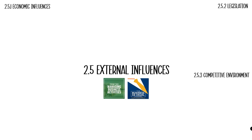2.5 is all about external influences that affect a business. By this point in the course, having covered Theme 1 and Theme 2, we've looked at all four main functional areas of a business — the marketing department, human resources, finance and operations. So this section starts looking at external factors and influences that will impact on a business, and is a nice precursor to Theme 3 where we start looking at strategy, because a lot of what we talk about here will be built upon there.